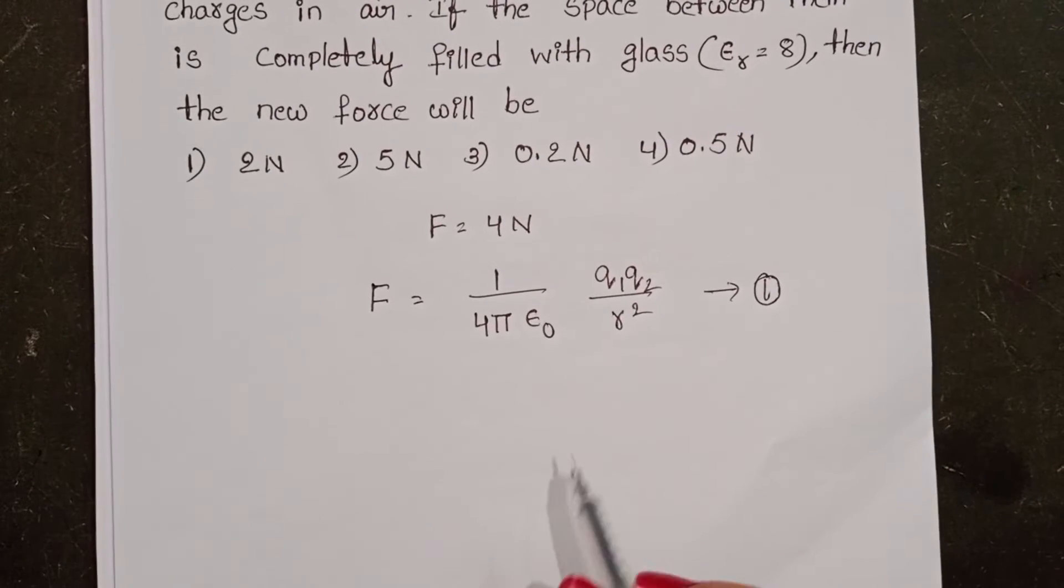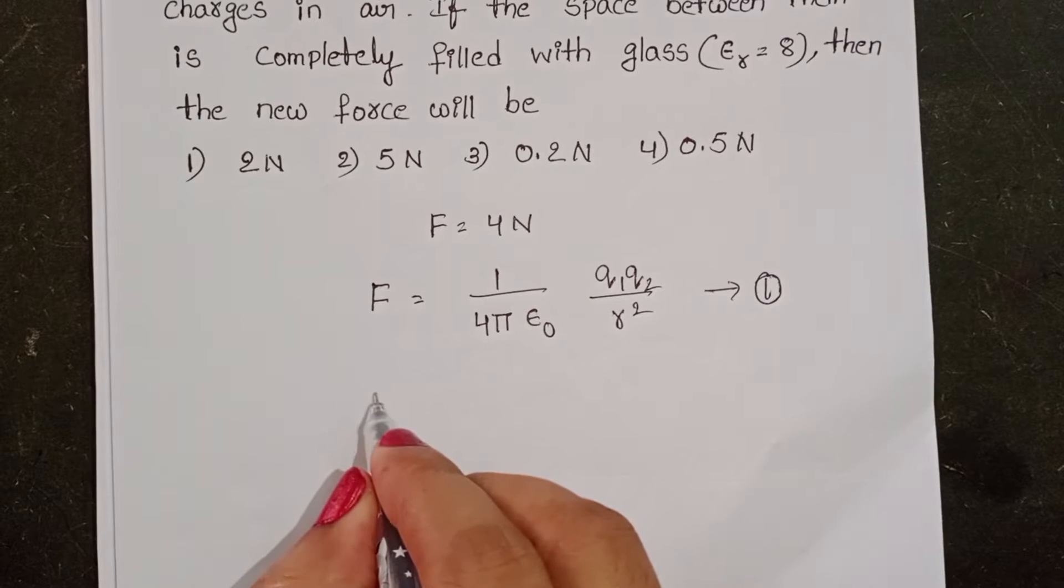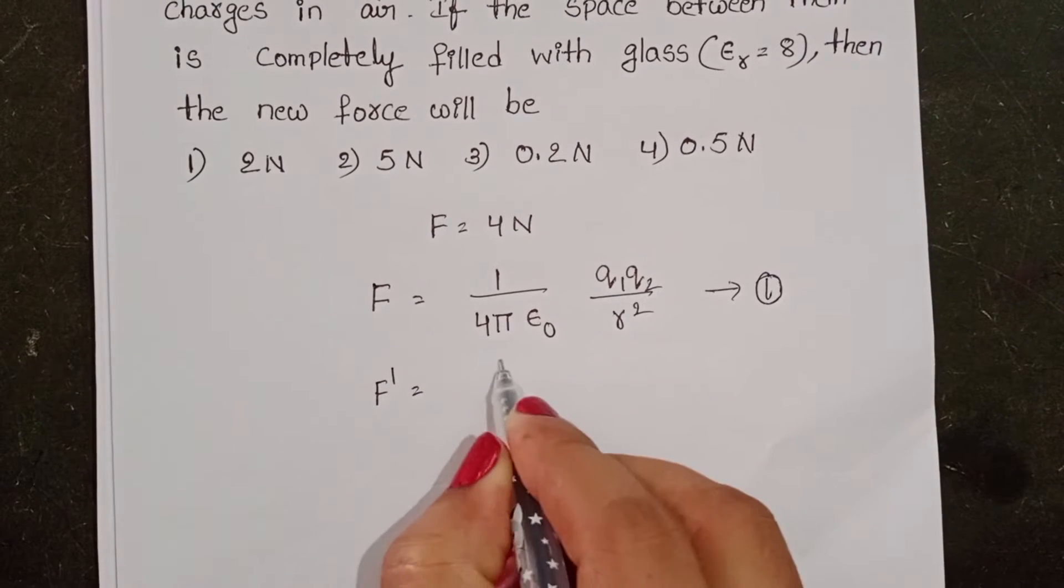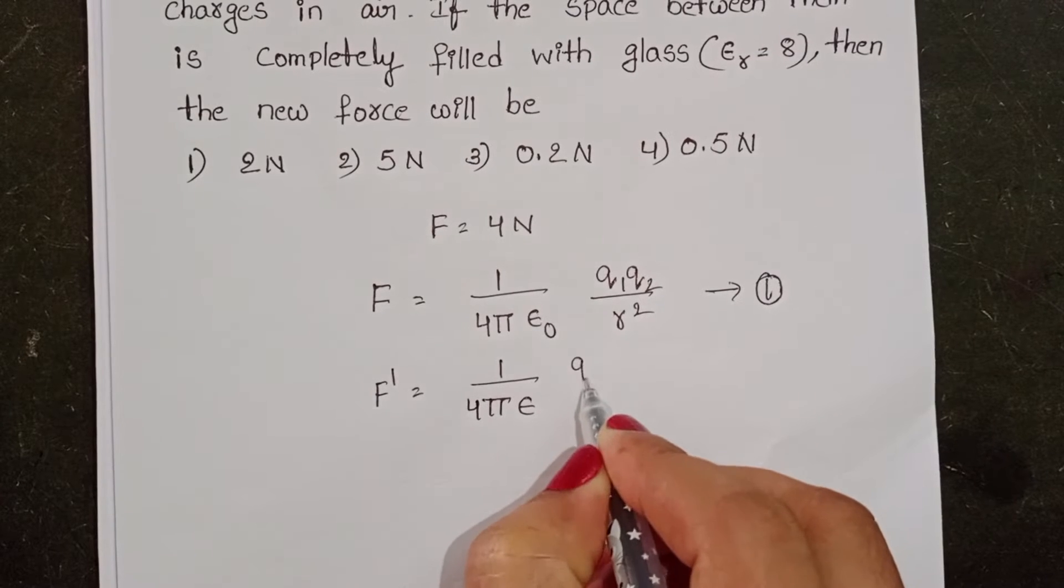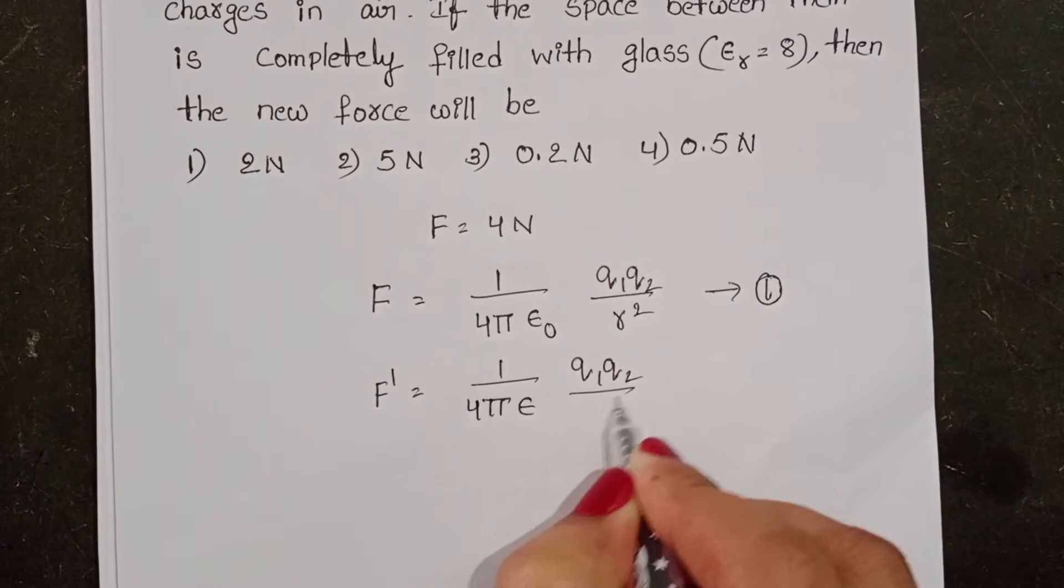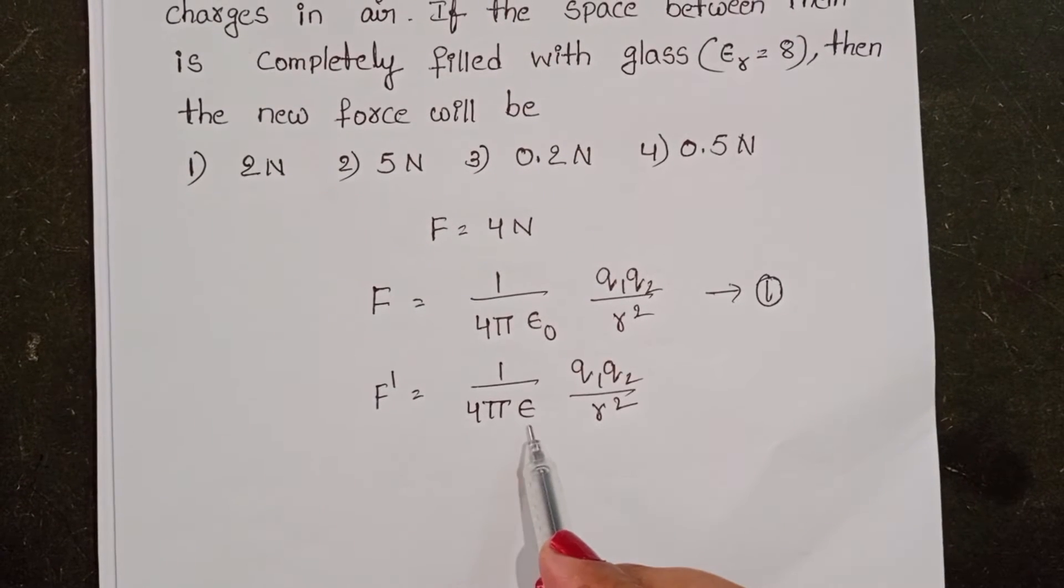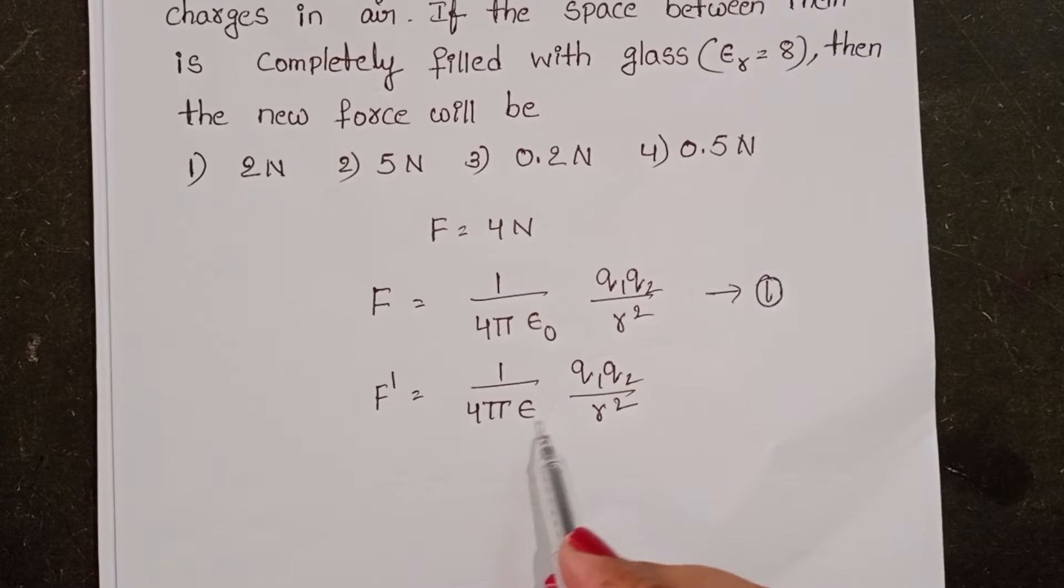And when the charges are placed in any medium, then force becomes 1 by 4 pi epsilon, q1, q2 by r square, where epsilon is the permittivity of the medium.